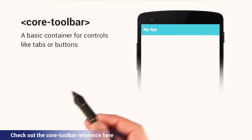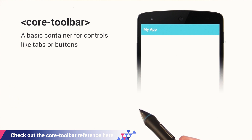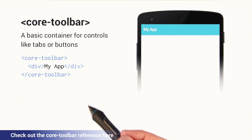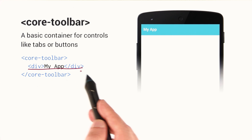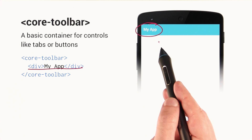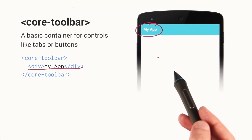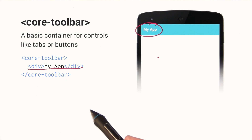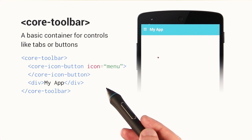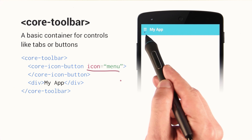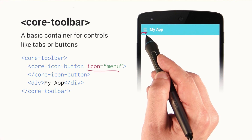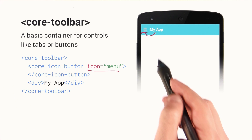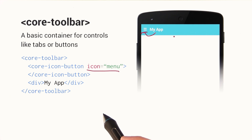The core toolbar is a really basic container for laying out controls like tabs or buttons. What I'm doing here is I've got a toolbar element on my page and I've just put a div inside of it that says My App, giving me the title in the top left. I can nest additional items inside, like a core icon button with an icon menu — that little hamburger menu. The toolbar is smart enough to scoot my title out of the way horizontally. I don't need to write any CSS to make this happen.